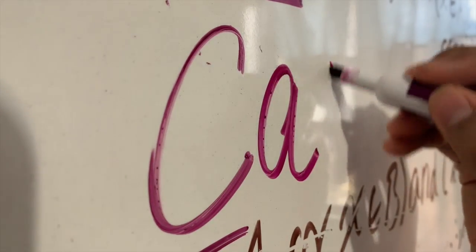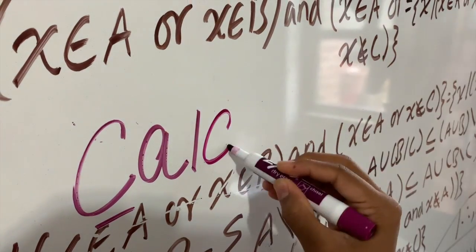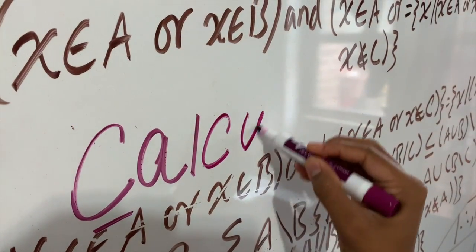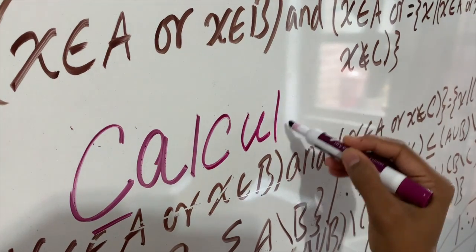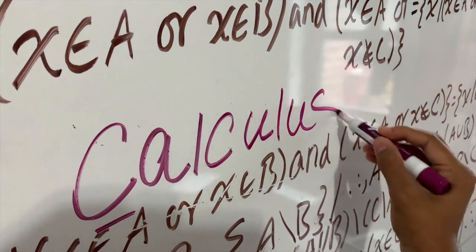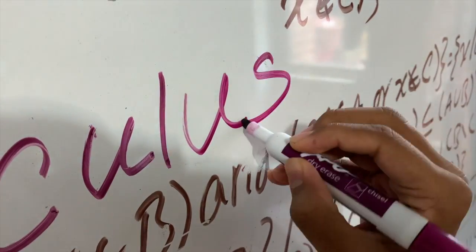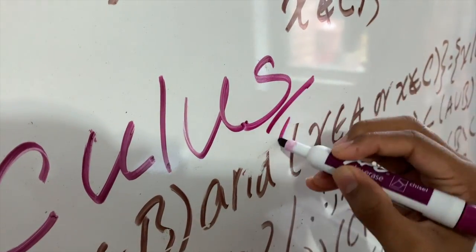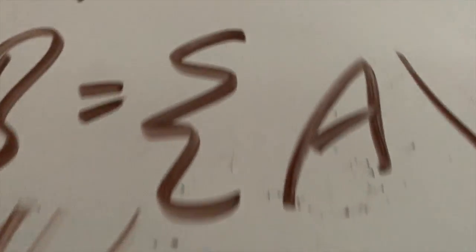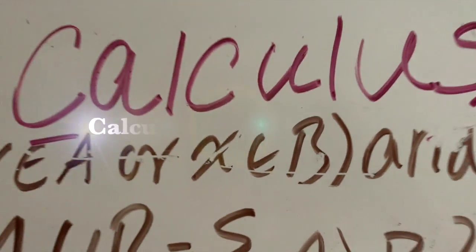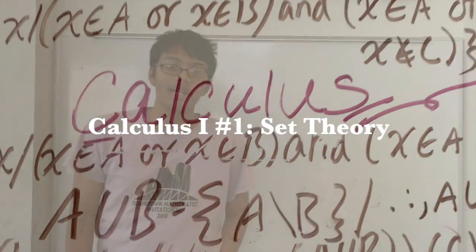Dream to become the next Sir Isaac Newton or Albert Einstein? Learn calculus from the master. Refath Bari, aka 800 over 800 guy, is teaching calculus this year. Watch his videos to achieve your dream.